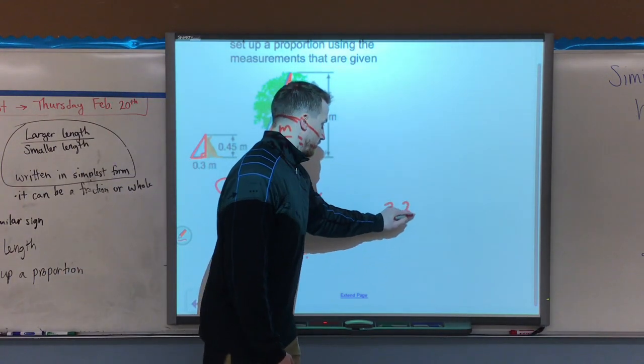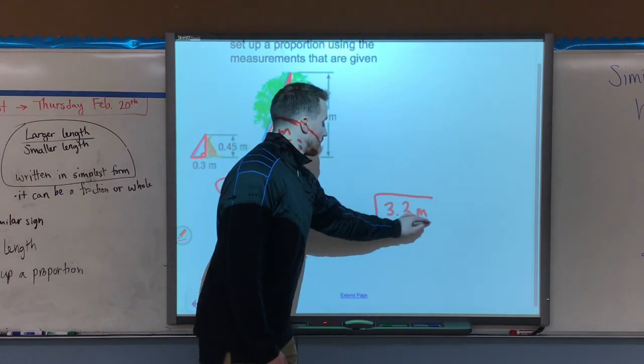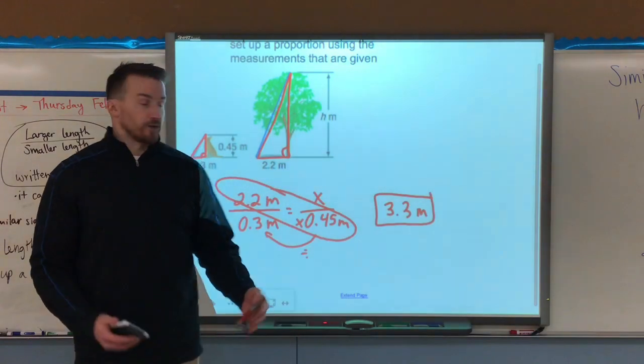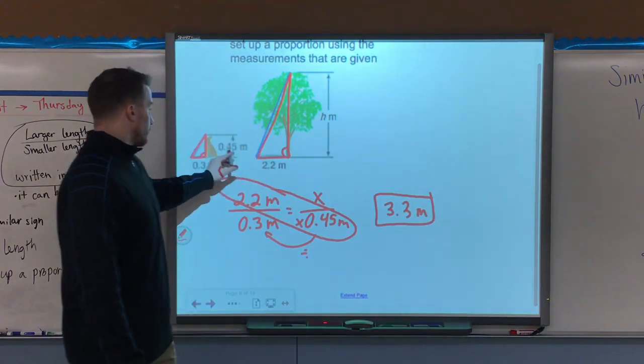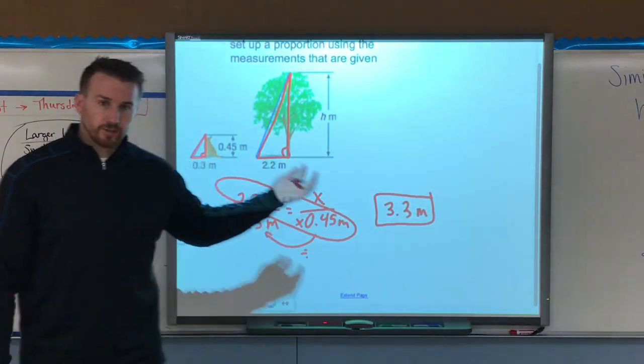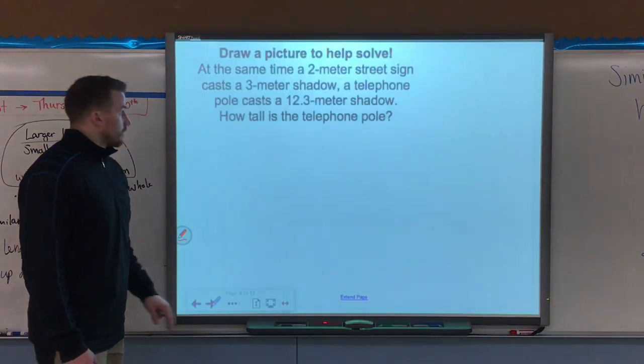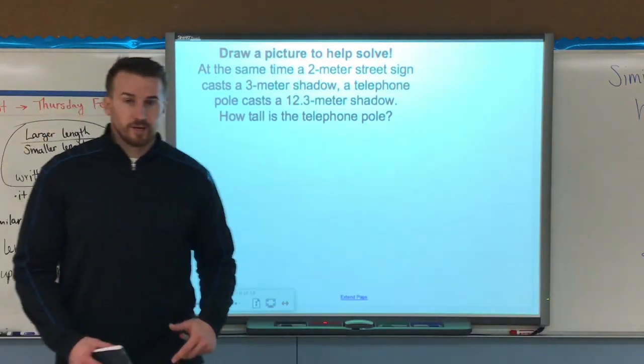That gives me the height of the tree, which is 3 and 3 tenths meters. Now that makes sense, because the height should be longer than the shadow, and it should be fairly bigger than the height of the dog, as you can see in this picture. Next example.